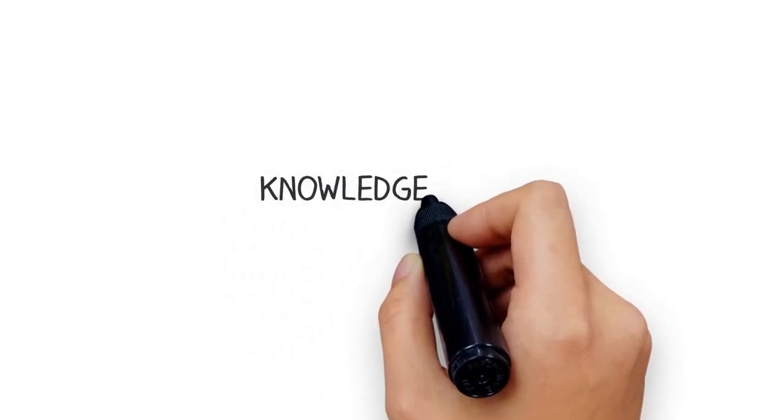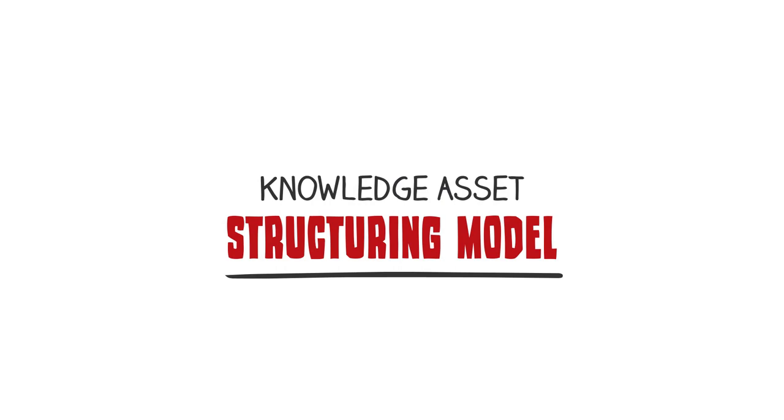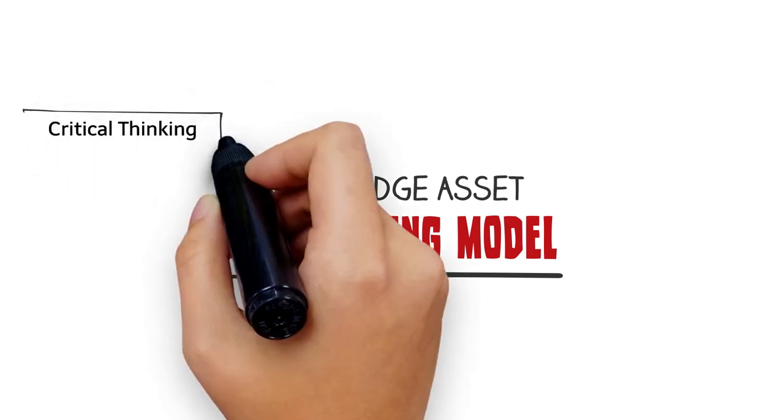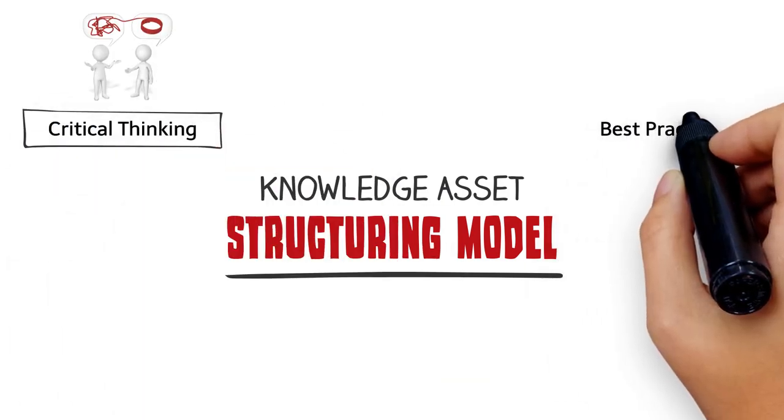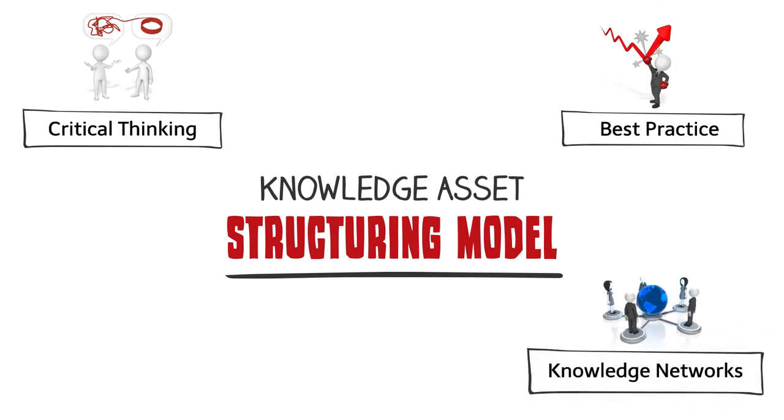The knowledge asset structuring model consists of the following four areas: critical thinking, best practice, knowledge networks, and finally, lessons learned.